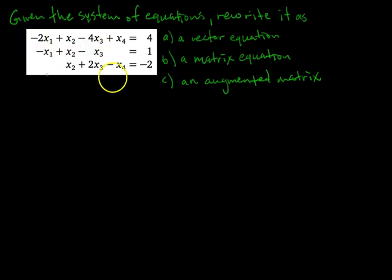Hello, we are given this system of three equations in four unknowns, and we're told that we want to re-represent it as a vector equation, as a matrix equation, and as an augmented matrix.